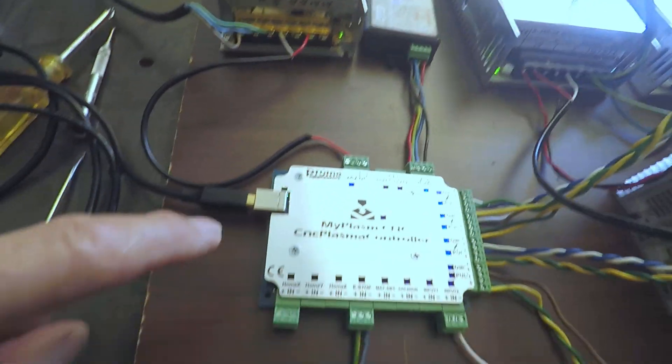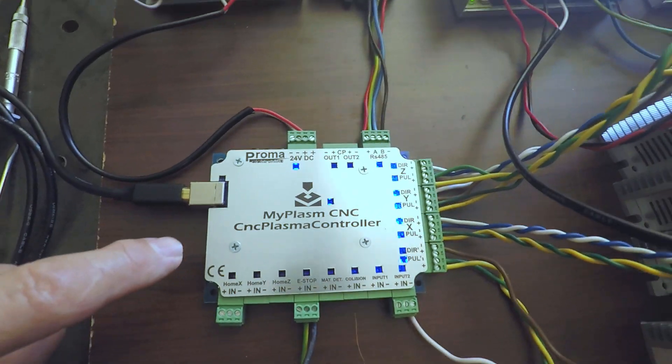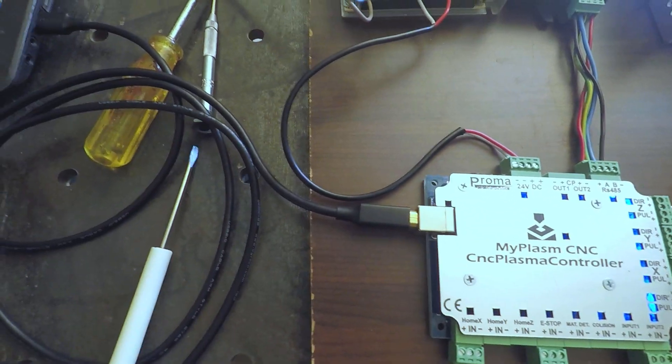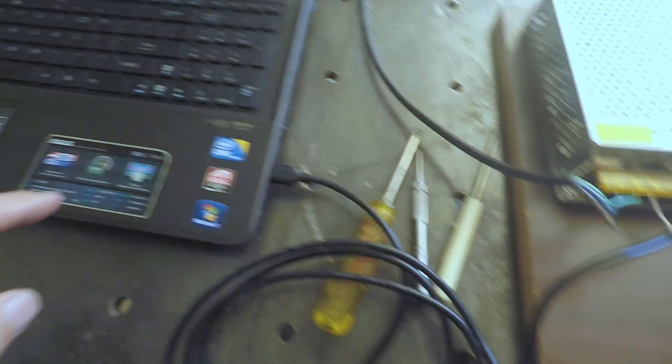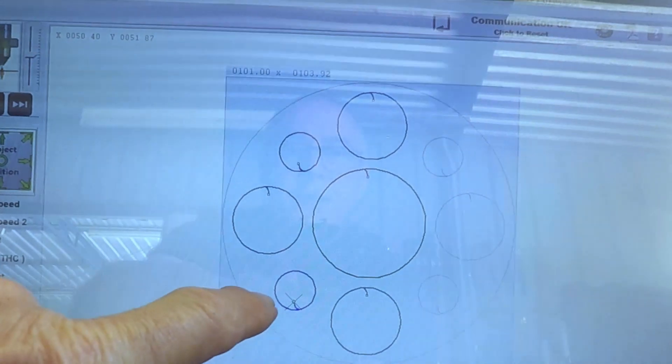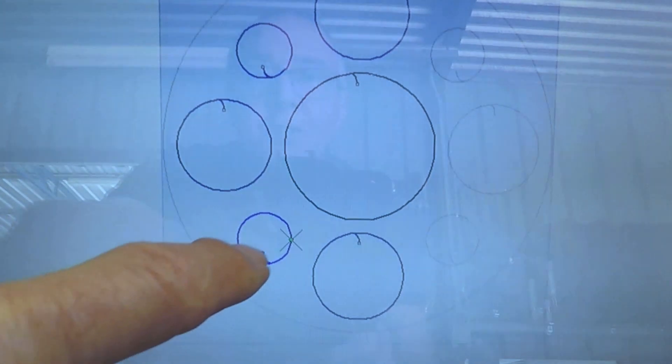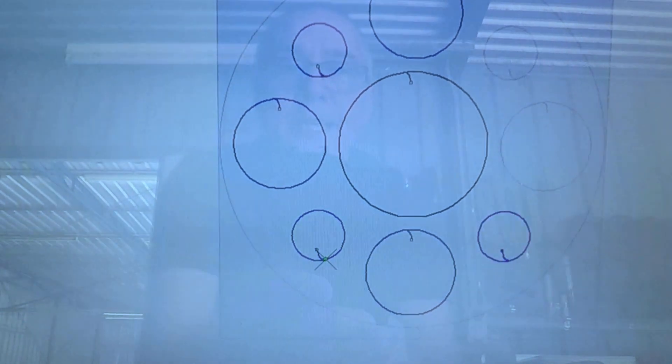This is the MyPlasm controller, it's got a USB cable as I mentioned before back into the computer. As you can see now you can see the little cursor which is the torch simulator driving around cutting that hole. Now it goes over to this one.